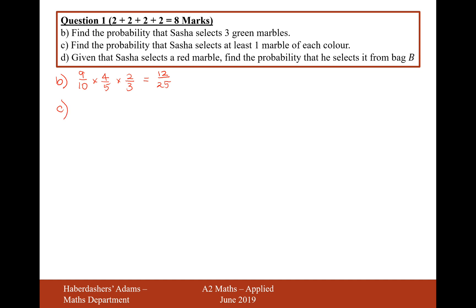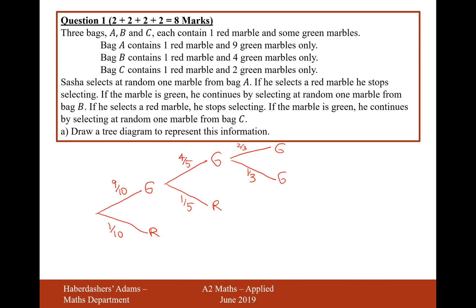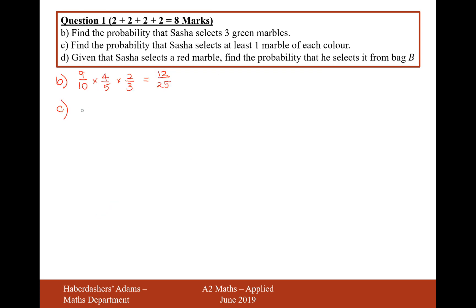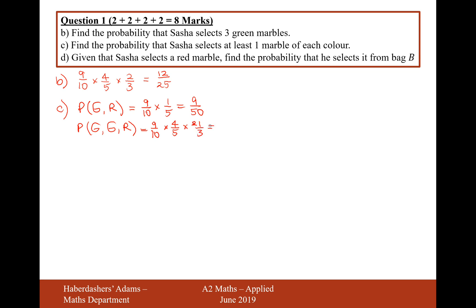Part C: find the probability that Sasha selects at least one marble of each colour. The different options are: green then red from bag B, or green, green, then red from bag C. The probability of green then red is nine out of ten times one out of five, which is nine out of 50. The probability of green, green, then red is nine out of ten times four out of five times one out of three, because he selects the red marble on that last turn, giving six out of 25.